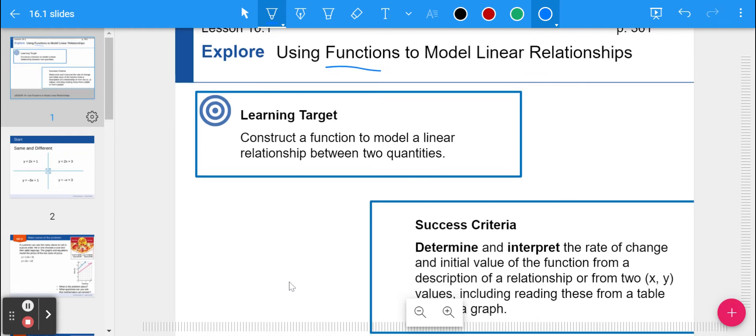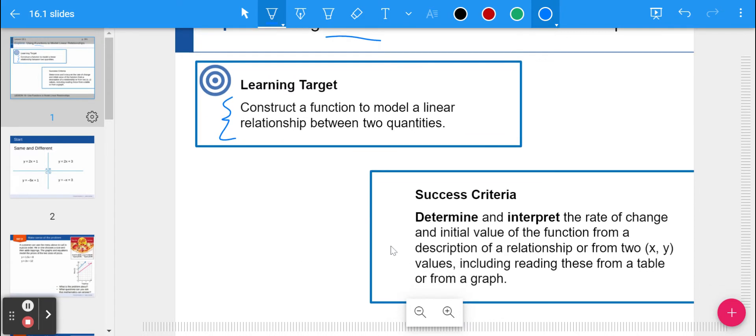Our learning target for today is to construct a function to model a linear relationship between two quantities. It might be an equation, a table, a graph, or a set of ordered pairs. We're specifically going to work with graphs and equations today. By achieving that goal, we're going to be able to determine and interpret rates of change and initial values of functions.